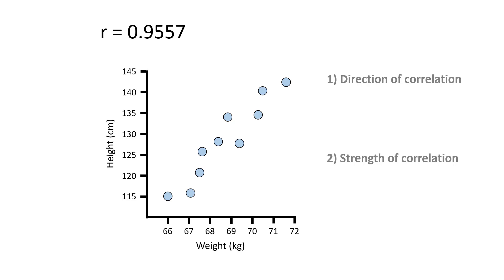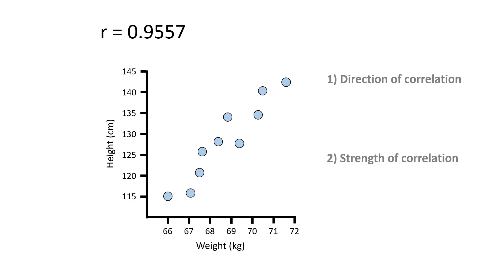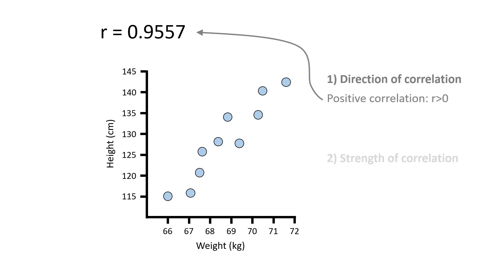It is worth mentioning that the correlation coefficient value can be any number between negative 1 and positive 1, and it has no units of measure. To understand the direction of the linear correlation, you simply look at whether the coefficient value is negative or positive. A positive r-value indicates a positive correlation between the two variables, as seen in our example since our r-value is a positive number.